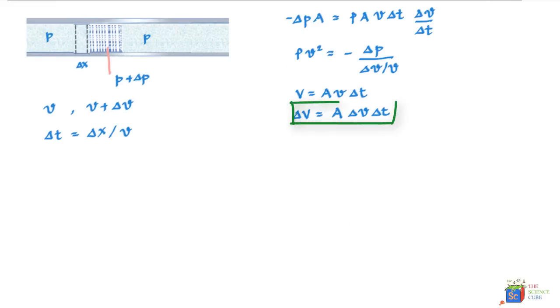So if we divide this equation by this, what we get is delta V upon V is equal to A delta V delta T upon A V delta T, and you can see that the terms cancel off over here, and what we get is this equals delta V upon V. So if we substitute this expression over here, instead of delta V upon V, we write capital delta V upon V.